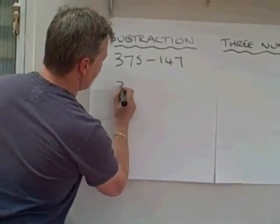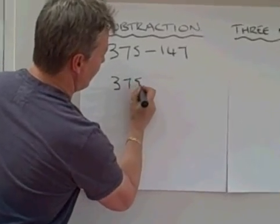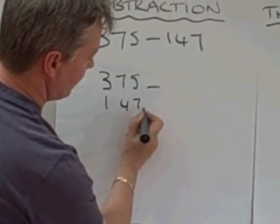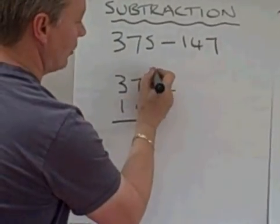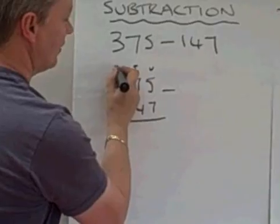So I'm going to rewrite it as 375 take away 147. And like before, I'm going to treat them separately as units, tens, and hundreds.